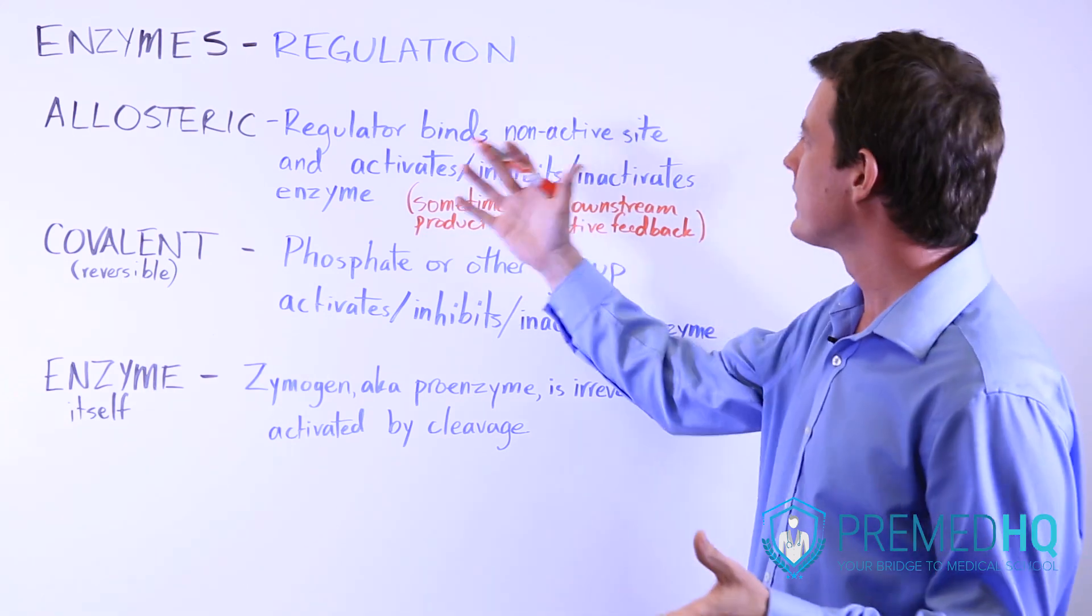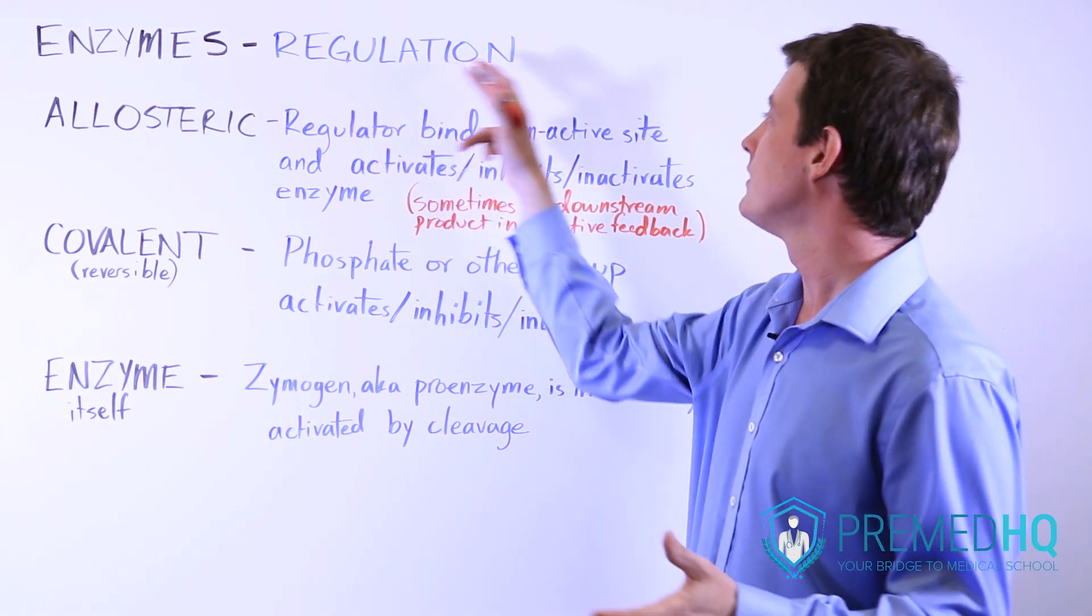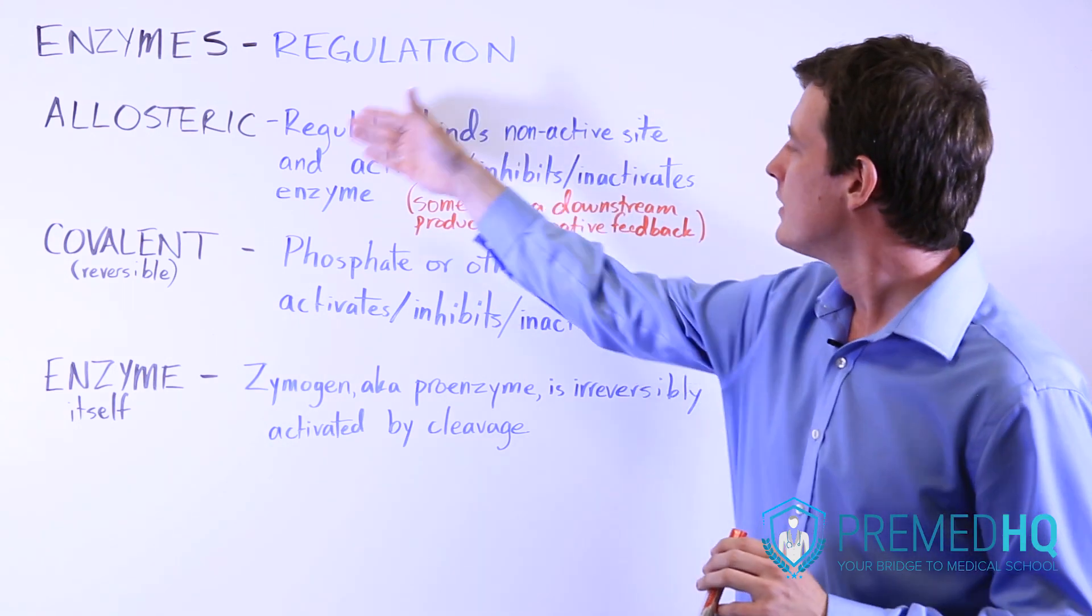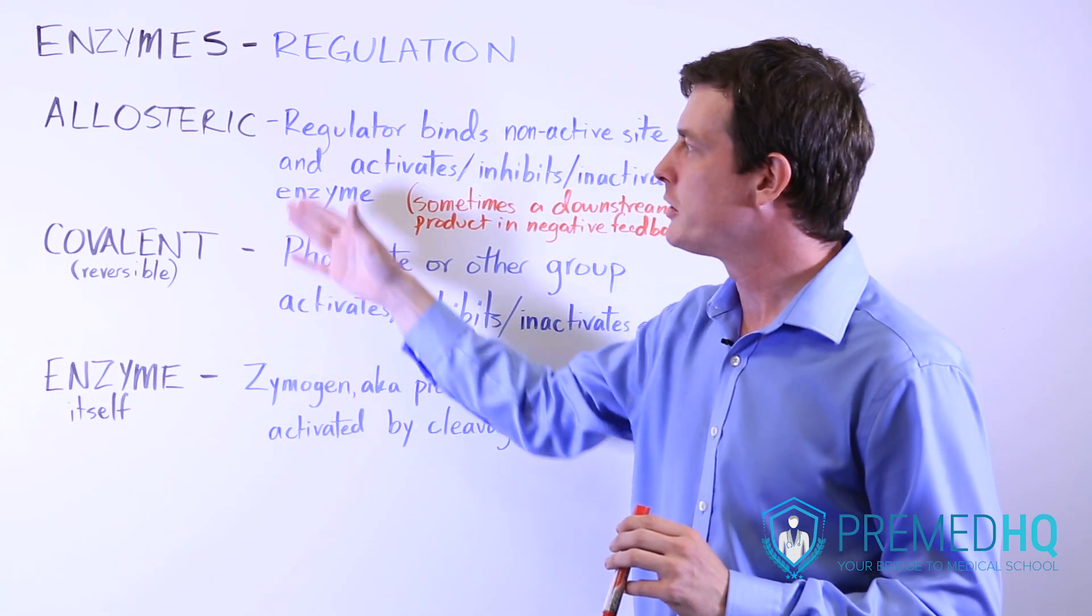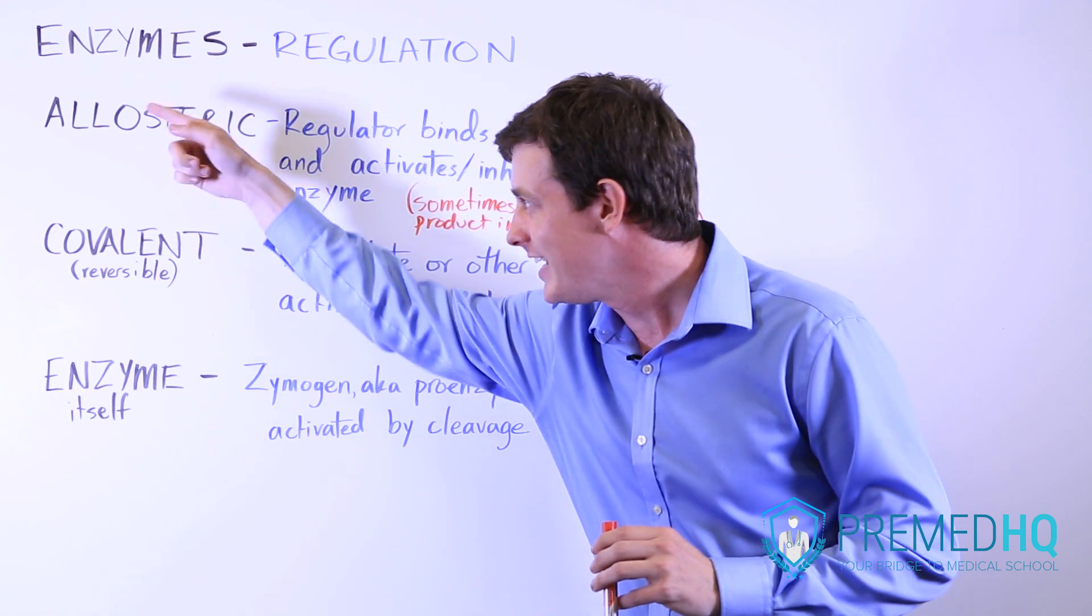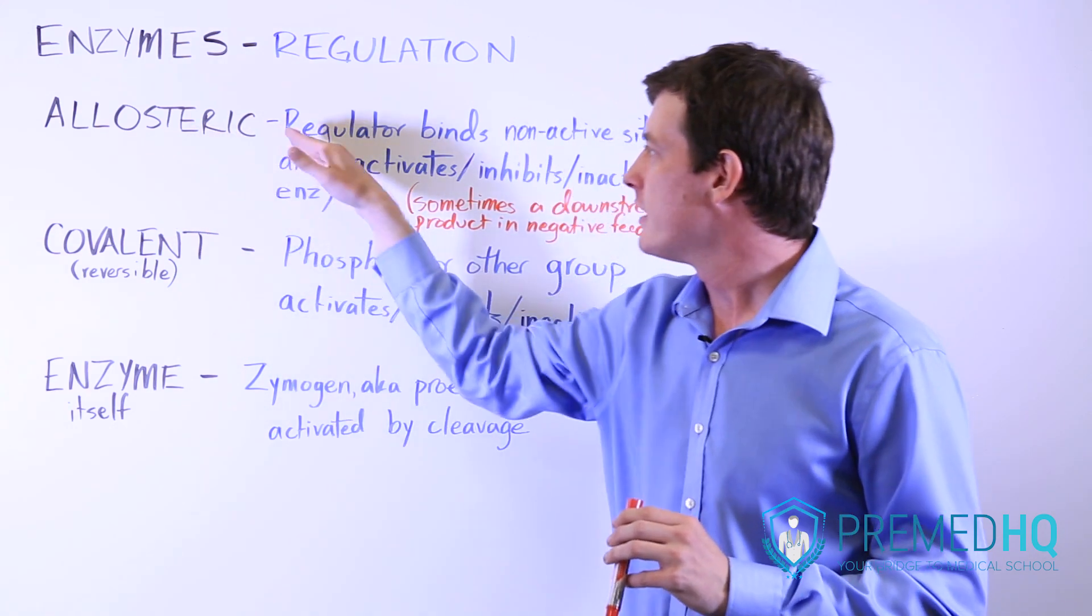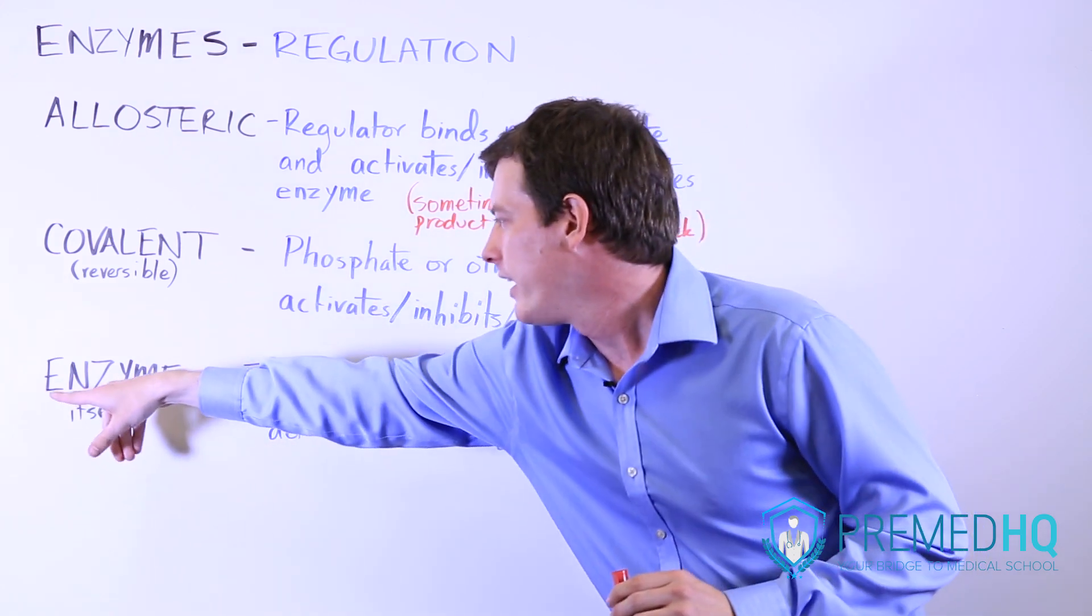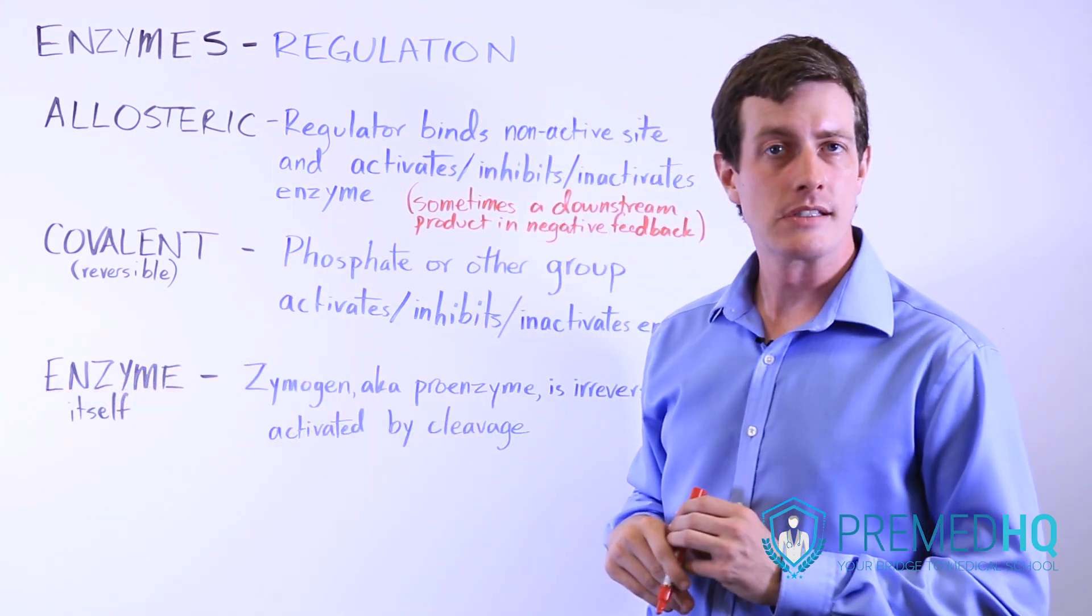With enzymes, there are various things you can do to regulate their function, and we'll be talking about three different approaches for that, which you may see described as ACE: allosteric regulation, covalent regulation, and regulation of the enzyme itself.